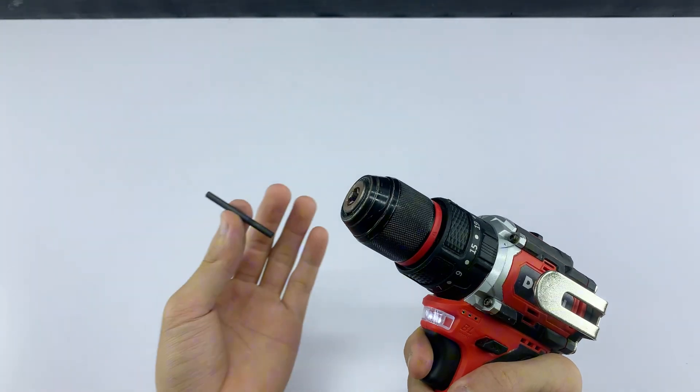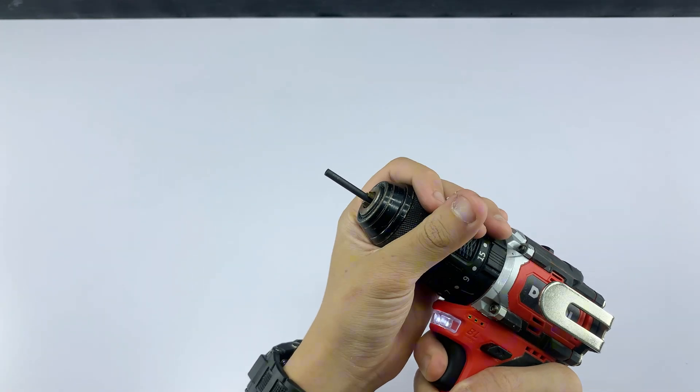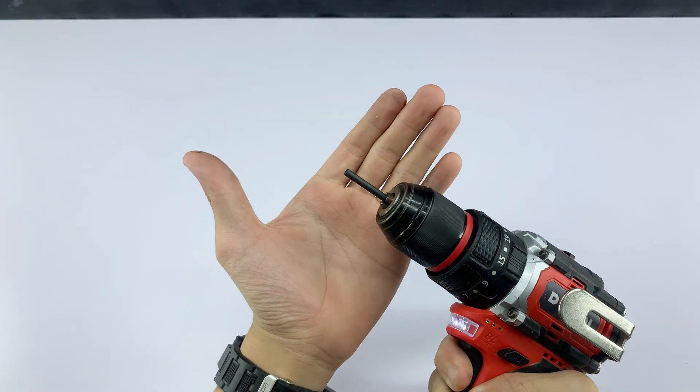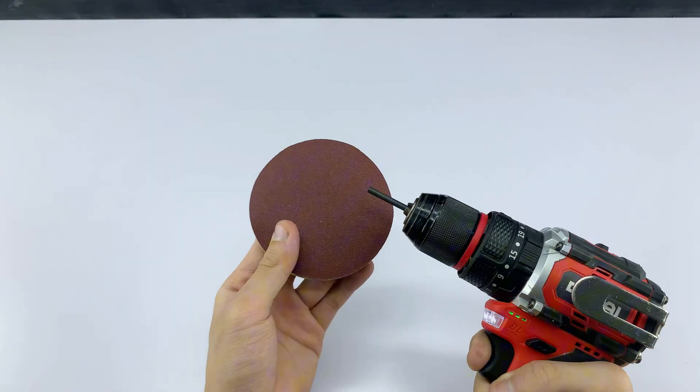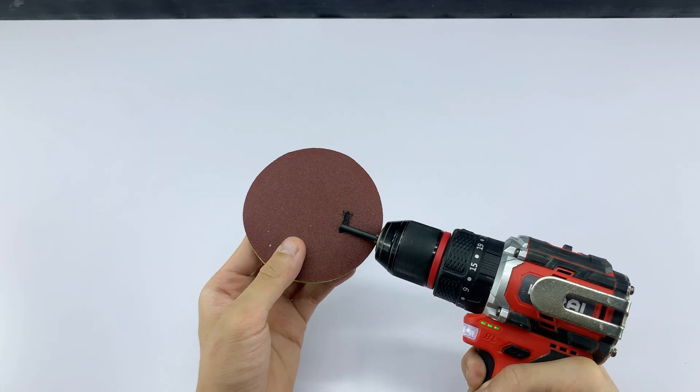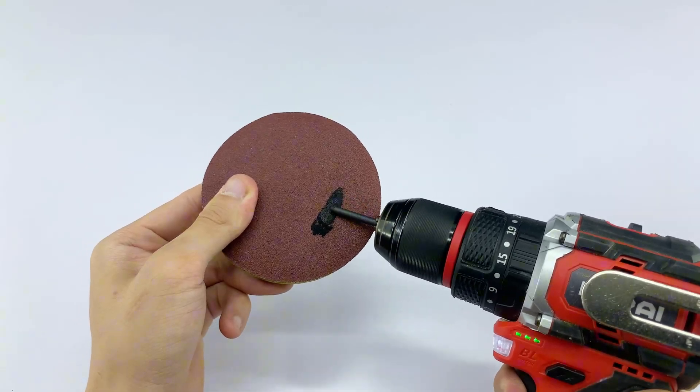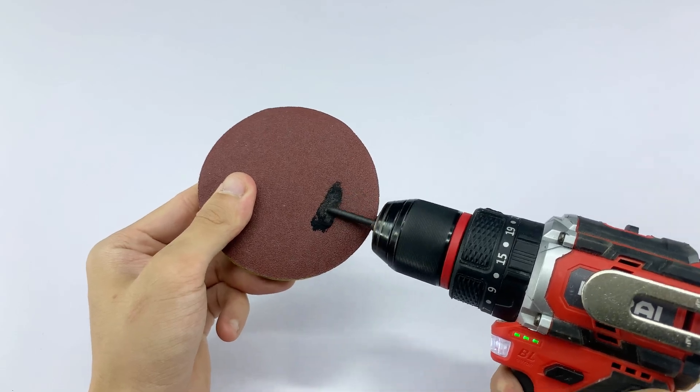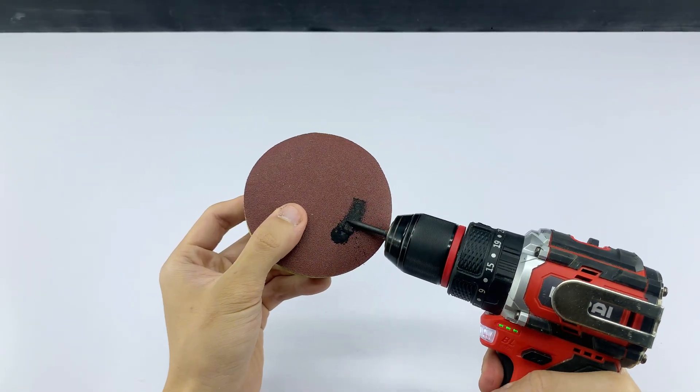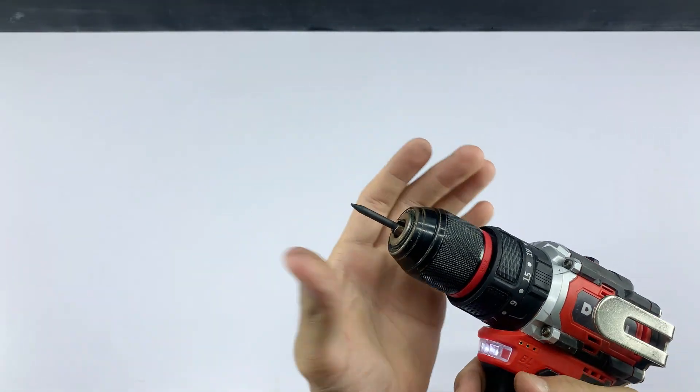I'm attaching the carbon rod to a power drill. I'm carefully sharpening one end of the carbon rod with the drill to create a fine pointed tip. This will create a fine pointed tip, essential for what comes next. Look at that precision!